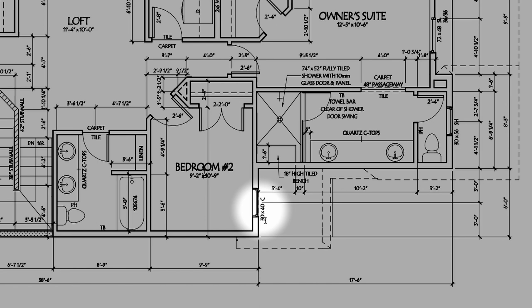The next thing we want to talk about is windows. All window sizes and locations are going to be shown on the drawing, and every window is going to have a label right next to it showing the size of the window, always reflected in inches. The measurements are always width first and then height. So for example, I know that this window here is 30 inches wide by 40 inches tall. Next to this you're going to see a letter which shows what type of window it is.